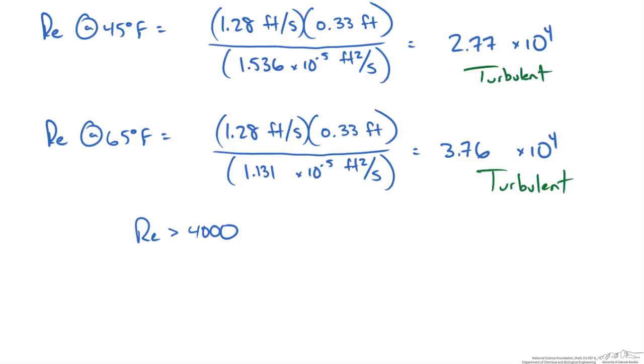To calculate the entrance length for these two flow profiles, we would use the following relationship where the entrance length over the diameter of our pipe equals 4.4 times the Reynolds number to the 1/6th power.